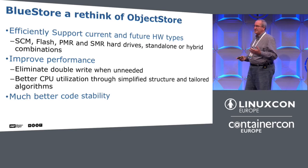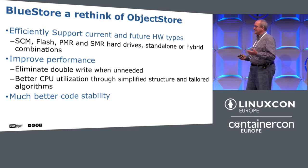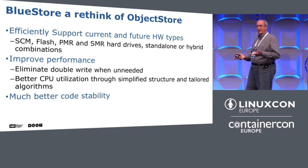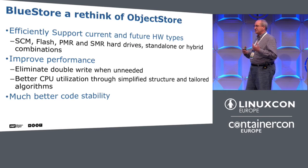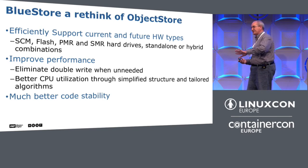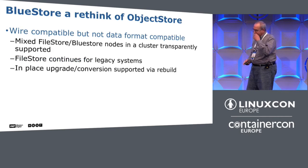The biggest performance boost from Bluestore is getting rid of the double write, and we're going to get much better CPU utilization primarily because the data structures are tailored for Ceph rather than being a hybrid of POSIX file systems. We're already seeing much better code stability.